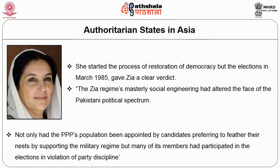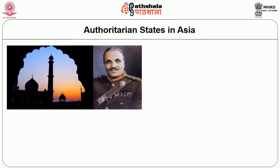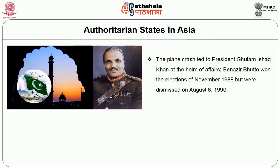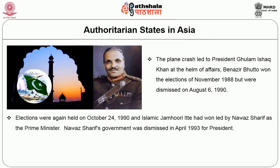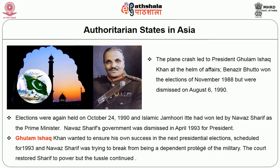Not only had PPP support been co-opted by candidates preferring to feather their nests by supporting the military regime, but many members had participated in elections in violation of party discipline. Zia made parliament subservient by pushing amendments reducing the Prime Minister's role, and declared Pakistan an Islamic society. Zia's death in a plane crash brought President Ghulam Ishaq Khan to the helm. Benazir Bhutto won the elections of November 1988 but was dismissed on August 6, 1990. Elections were again held on October 24, 1990, and the Islamic Jamhoori Ittehad led by Nawaz Sharif won. The Nawaz Sharif government was dismissed in April 1993, as President Ghulam Ishaq Khan wanted to ensure his own success in the next presidential election, while Sharif was trying to break free from being a dependent protégé of the military.